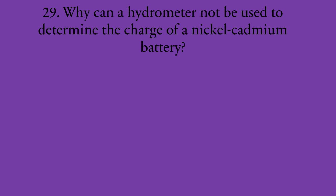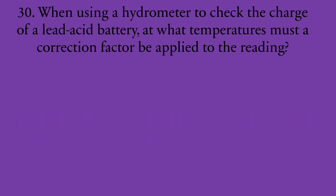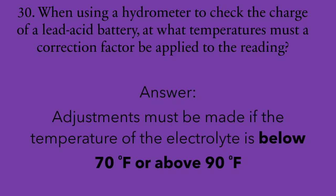Number twenty-nine: why can a hydrometer NOT be used to determine the charge of a nickel-cadmium battery? The answer is because there is no applicable change in the specific gravity of a nickel-cadmium battery between charged and discharged. The specific gravity remains around 1.24 and 1.3, making it impossible to use a hydrometer to determine charge state. Number thirty: when using a hydrometer to check the charge of a lead-acid battery, at what temperature must a correction factor be applied? Adjustments must be made if the temperature of the electrolyte is below 70 degrees Fahrenheit or above 90 degrees Fahrenheit.